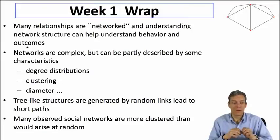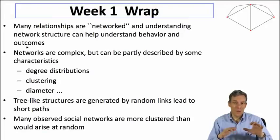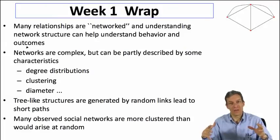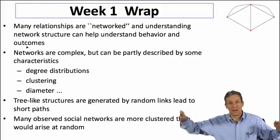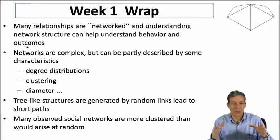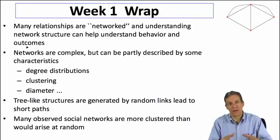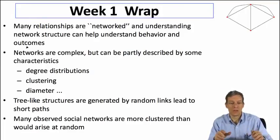Another important point we covered was that tree-like structures tend to be generated by random links, and those lead to very short paths. If you've got simple tree structures underlying things, the branching process leads to path lengths that are logarithmic in nature — much shorter than marching linearly in terms of the number of nodes. Many different kinds of network formation processes are actually going to lead to some sort of underlying tree structure, and that leads naturally to short kinds of paths.